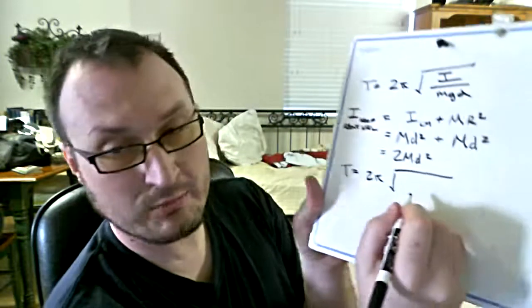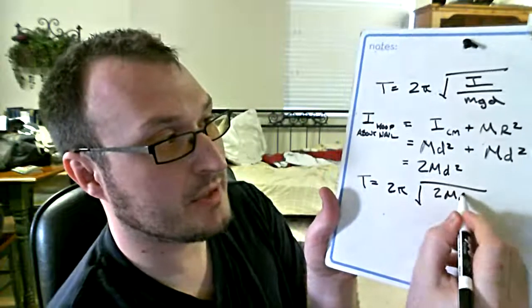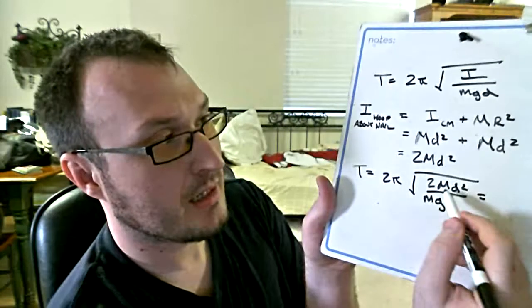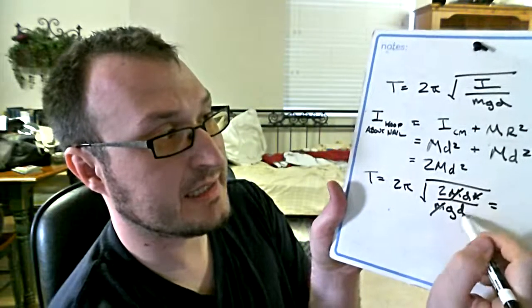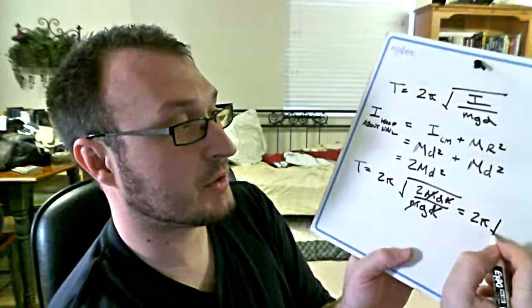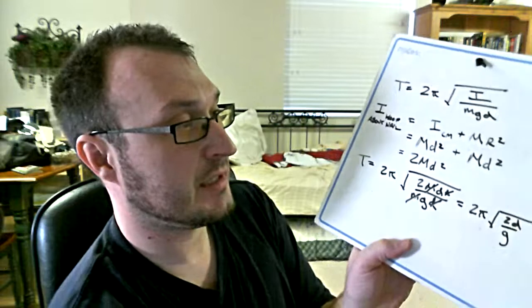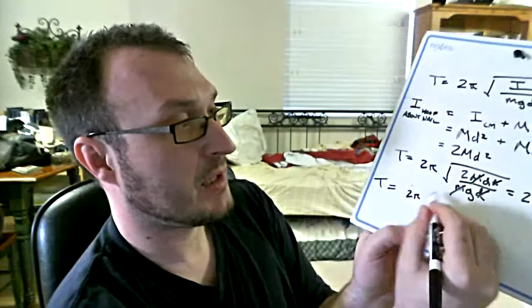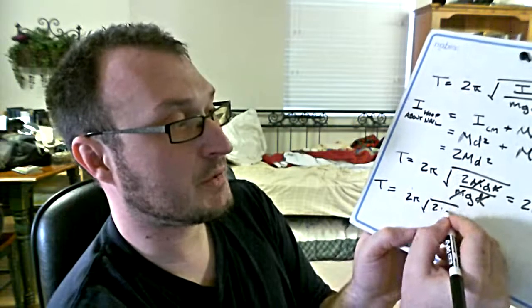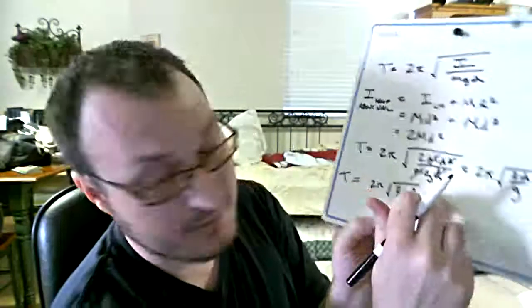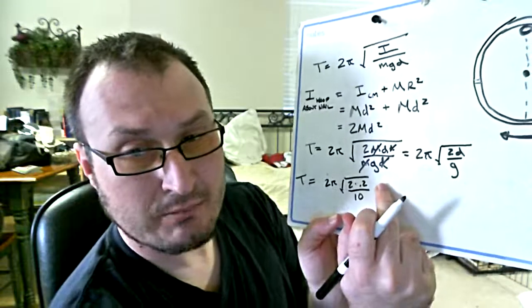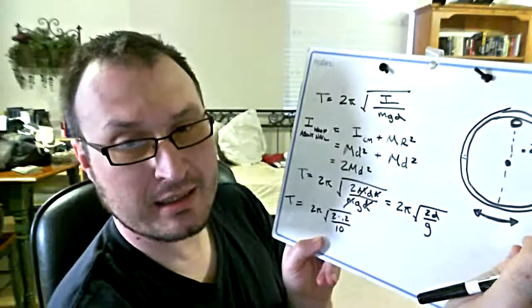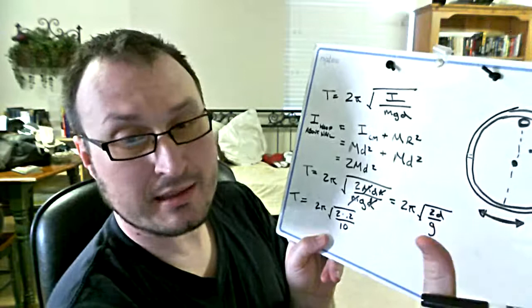Substituting I = 2Md² into the formula T = 2π√(I/mgd), we get 2Md² divided by Mgd. The mass M cancels, and one factor of d cancels, leaving T = 2π√(2d/g). Plugging in d = 0.2 m and g = 10 gives T = 2π√(0.04). Notice the mass cancelled completely — the 3 kg given in the problem is extraneous information, a little trap they put in there. The period of this physical pendulum is independent of mass.